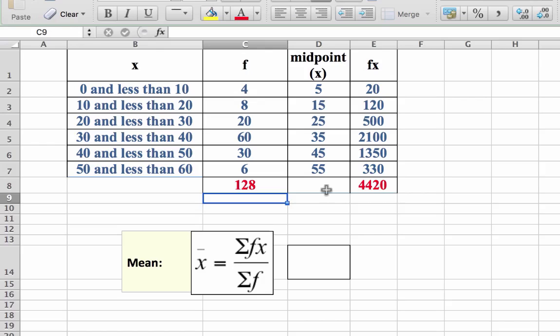Now we can complete the value for the mean. So equals, open your bracket, clicking on the sum of fx, divide by, which is forward slash, clicking on your sum of f, close your bracket and we have 34.53.